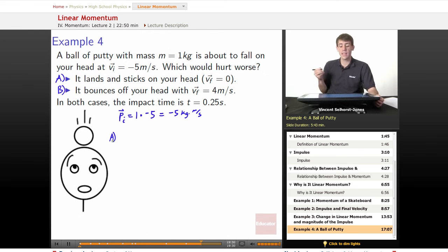So case A, it lands and sticks on your head, so its velocity final is equal to 0. So if that's the case, what's the final momentum? Well, still mass of 1, but now it sticks, so it has no velocity at the end. So it's got a momentum of 0 in the end. Compare that to B, where we've got a final momentum equal to mass of 1 kilogram times 4 meters per second. So it's got 4 kilograms times meters per second.